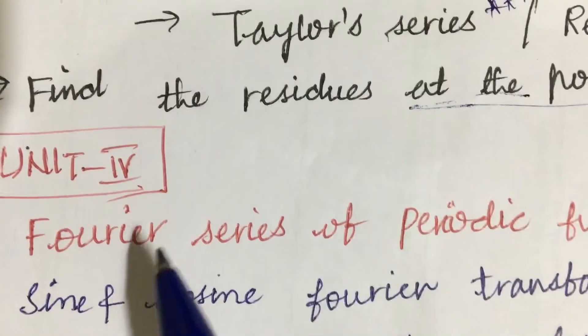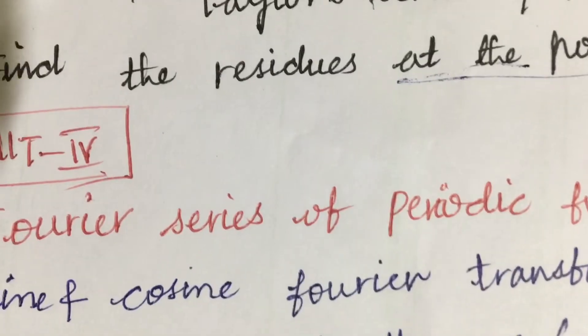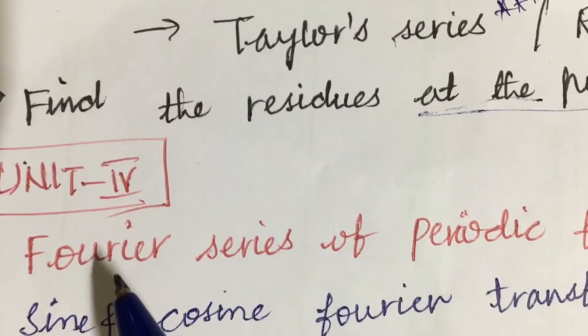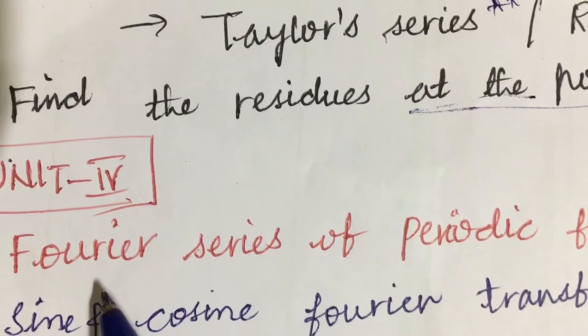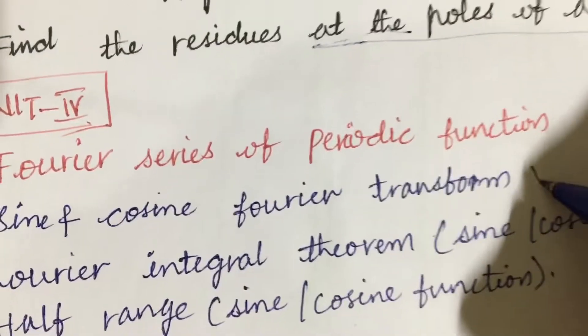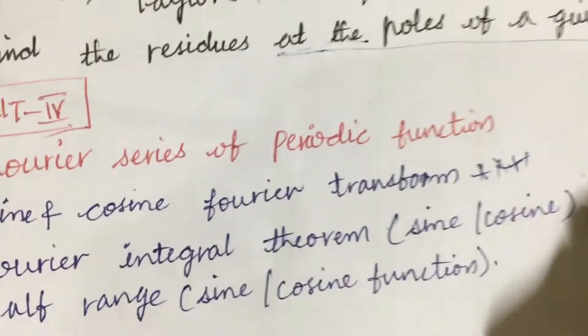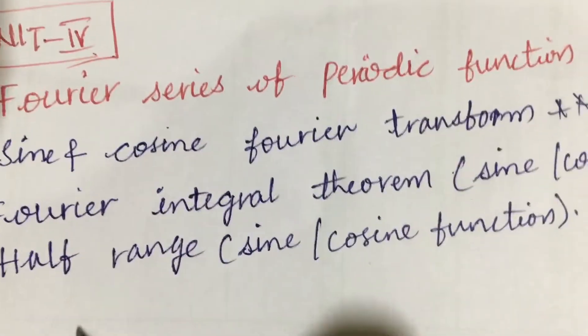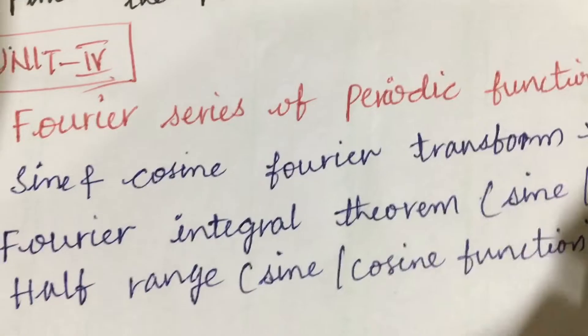The fourth unit - one question will be followed from the fourth as well as the fifth unit. Fourier series of periodic function, sine and cosine Fourier transform is one of the gunshot questions. The Fourier integral theorem related to sine and cosine as well as half range sine and cosine functions may also be one of the very important questions. From this part you are going to get one question.